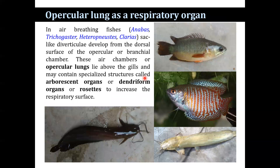The opercular lung, also known as branchial diverticula, also serves as a respiratory organ. In Anabas testudineus, Trichogaster, Heteropneustes fossilis, and Clarias batrachus, sac-like diverticula develop from the dorsal surface of the operculum. This air chamber, or opercular lung, lies above the gill and may contain specialised structures called arborescent organs, dendriform organs, or rosettes, which increase the respiratory surface.